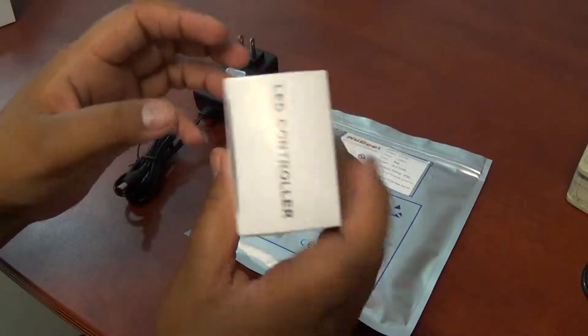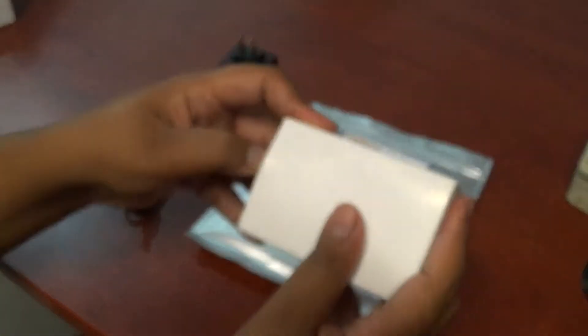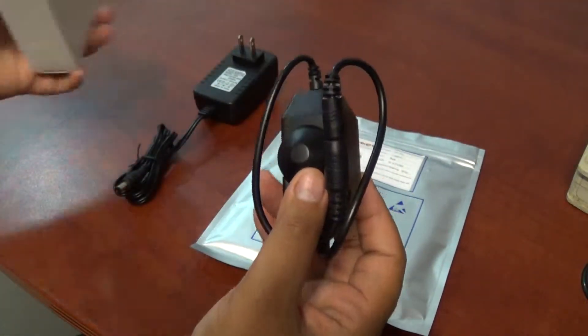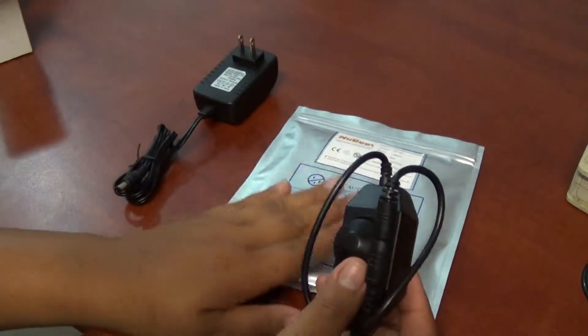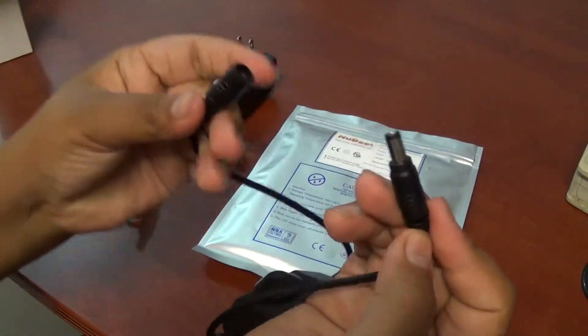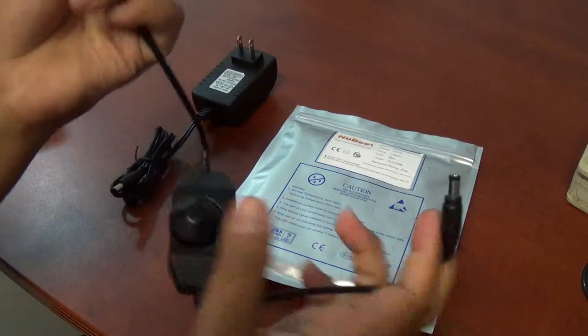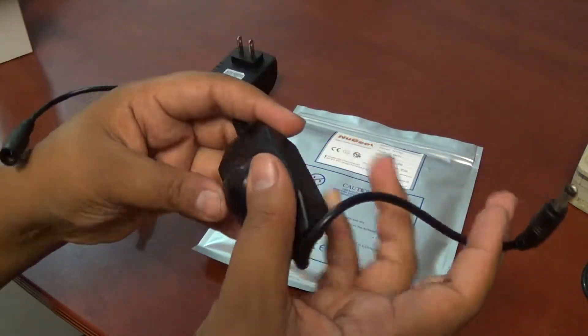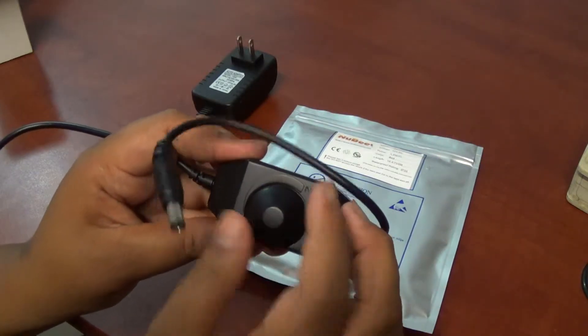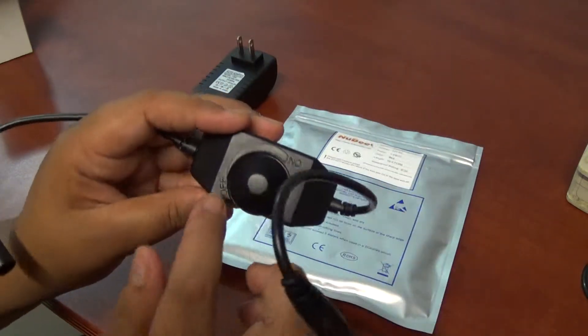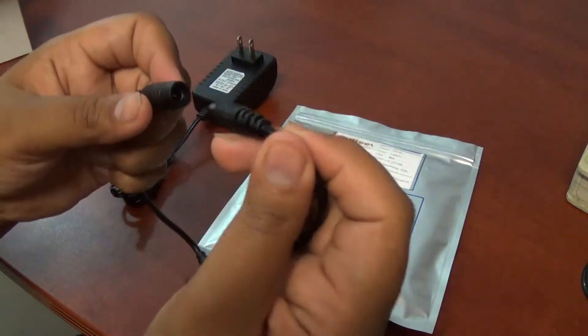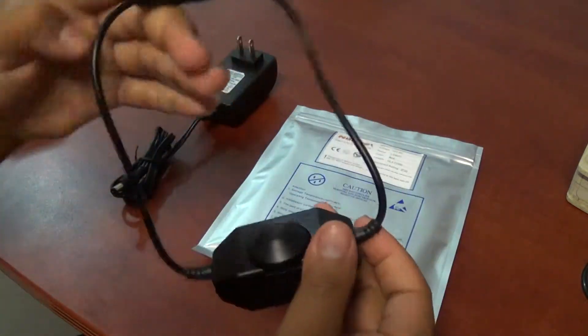Then we have here what's called the LED dimmer. This is easy to connect to your LEDs and to your power supply with these two connectors. It can make your LEDs bright or less bright. You control it. It even has an on and off button. We'll show you how to use it in a little bit.